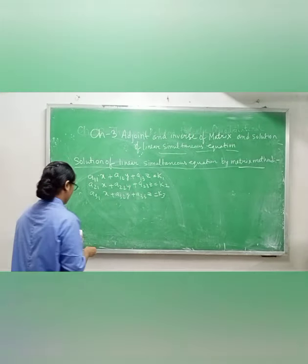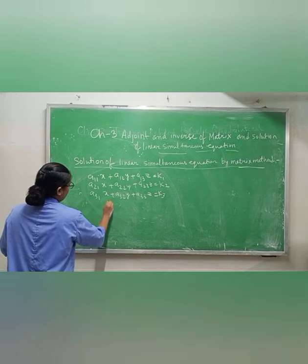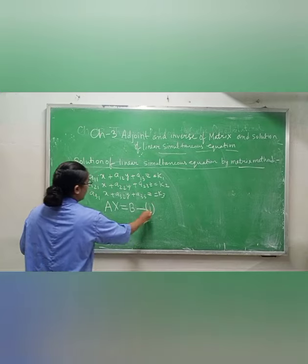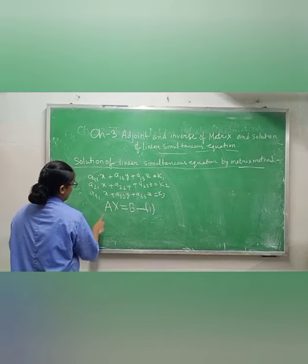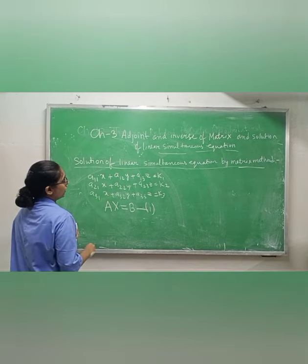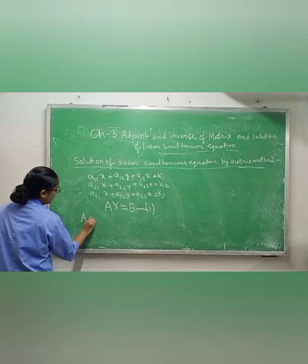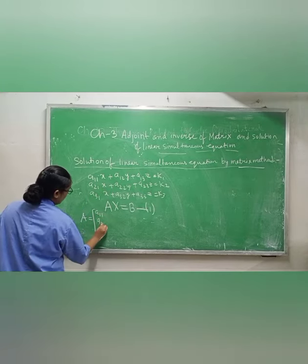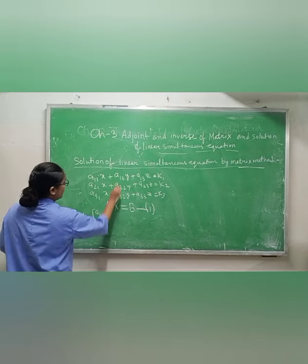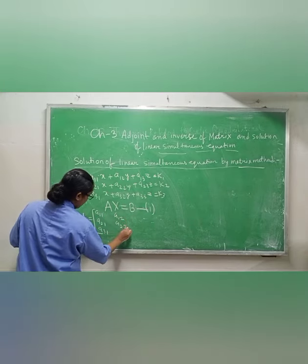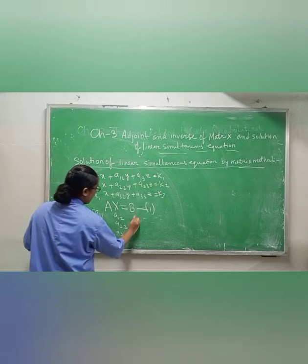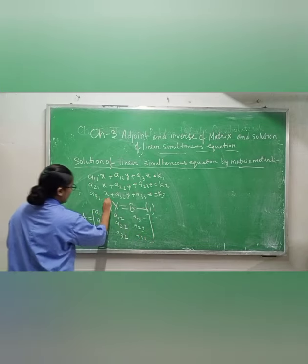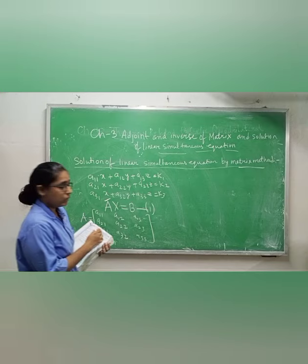What is the matrix method? We always take this as equation 1: AX = B. Here, A is the coefficient matrix of these three equations. The coefficients are a11, a21, a31, a12, a22, a32, a13, a23, a33. So A always represents the coefficients of the given equations.